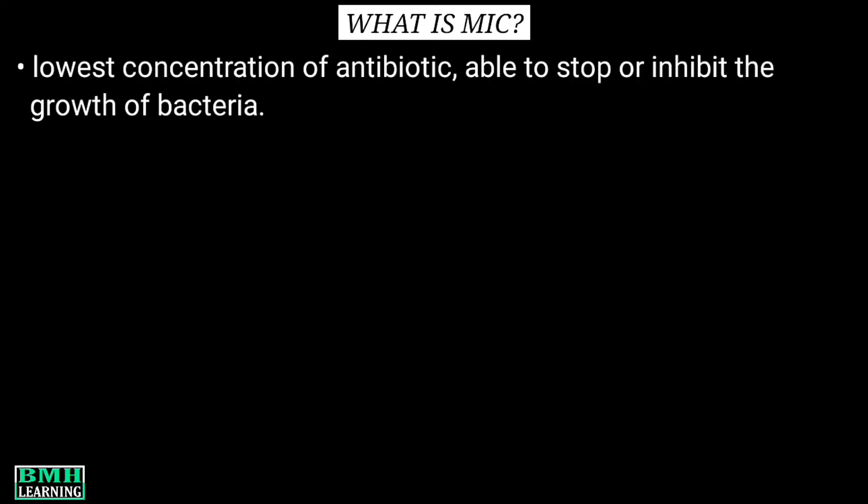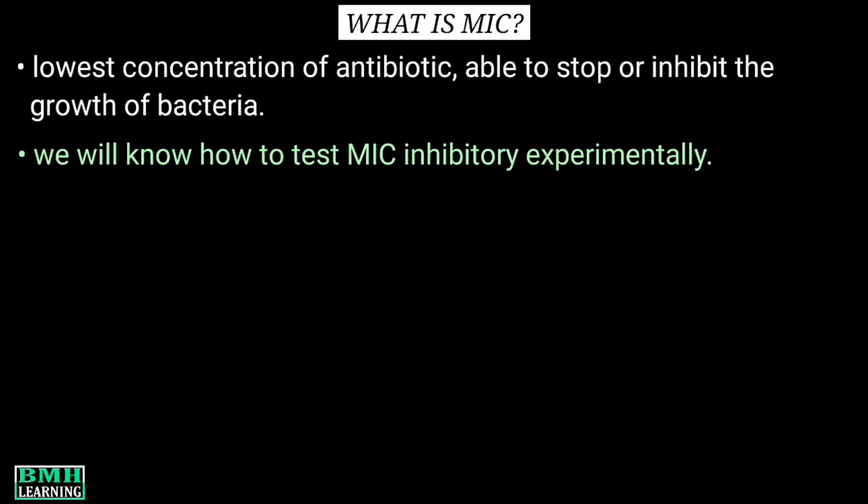Welcome to BMH Learning. In this video we are going to discuss minimum inhibitory concentration by agar dilution method. MIC, or minimum inhibitory concentration, is the lowest concentration of a chemical — usually an antibiotic — which is able to inhibit the growth of bacteria. In this tutorial we are going to test MIC experimentally using the agar dilution method.